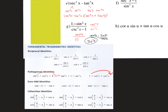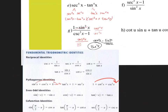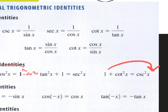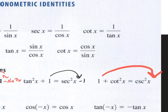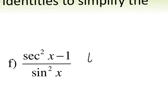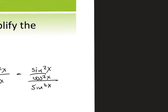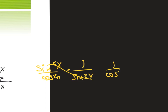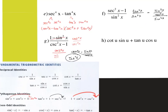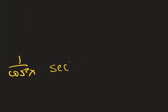Secant squared — where's my secant squared? Right here. Secant squared minus 1: if I move this one over, it becomes minus 1, so secant squared in this case is tangent squared over sine squared x. Again, tangent is sine over cosine. Using keep-change-flip, you have sine squared x over cosine squared x times 1 over sine squared x. Those cancel out, and you're left with 1 over cosine squared x. One over cosine is the same as secant, so you can write this as secant squared x.